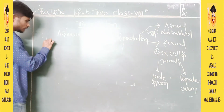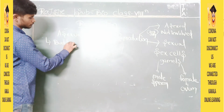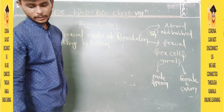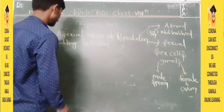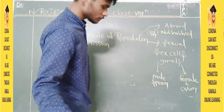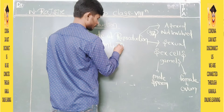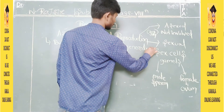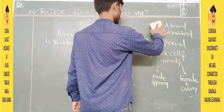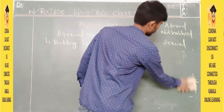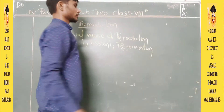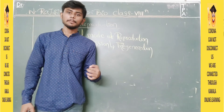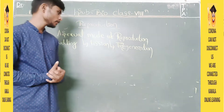Asexual modes of reproduction include: first, budding; second, fission. There are also other types not limited to your book: regeneration, fragmentation, spore formation, and parthenogenesis — there are many types. But I will explain these three in this class: budding, fission, and regeneration.